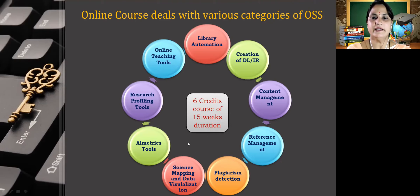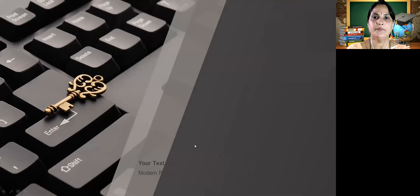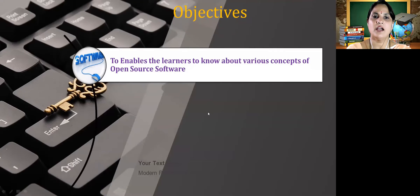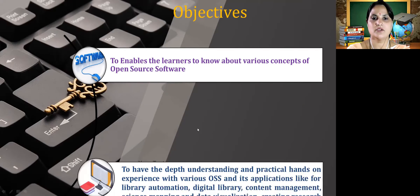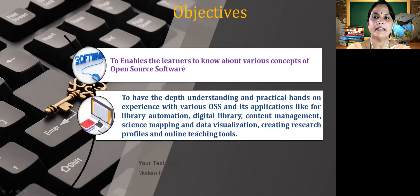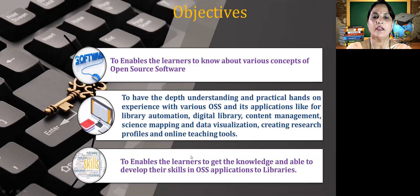It will be a six credit course of 15 week duration. The objectives of this course are to enable learners to know about various concepts of open source software, to have depth understanding and practical hands-on experience with various open source software and its applications like library automation, digital library, content management, science mapping, and data visualization for creating research profiles and online teaching tools. It also enables learners to develop their skills in open source software and its application to libraries.